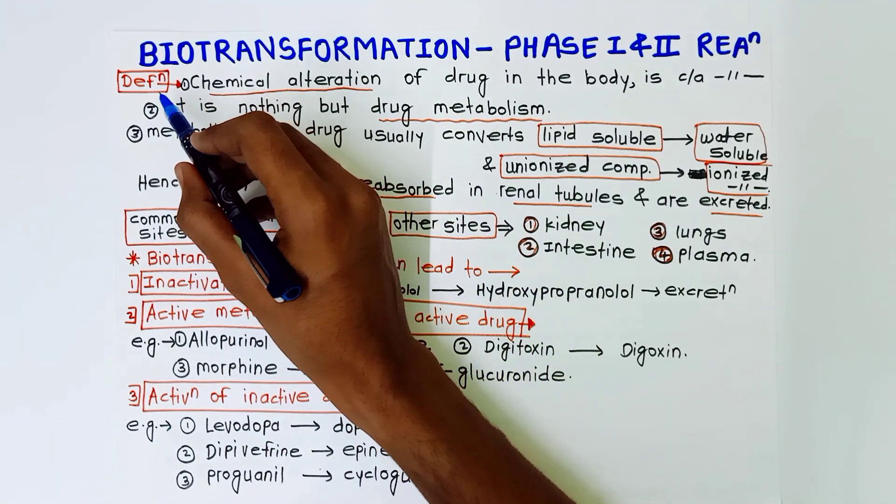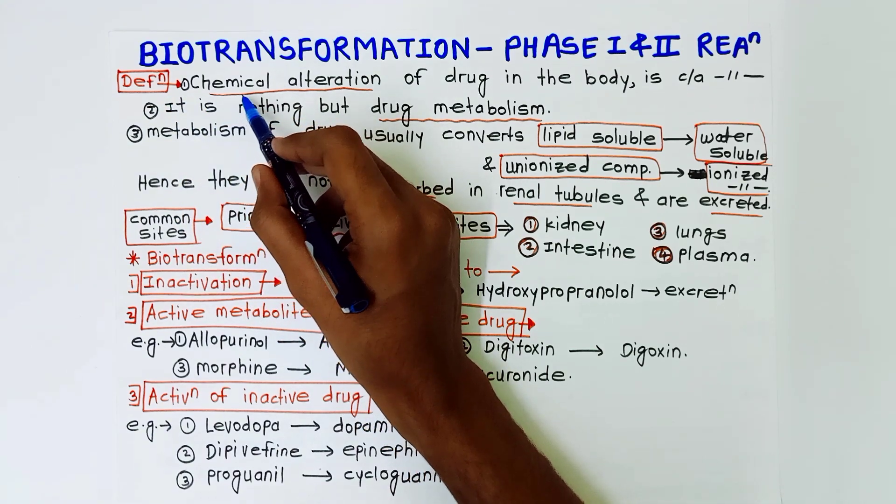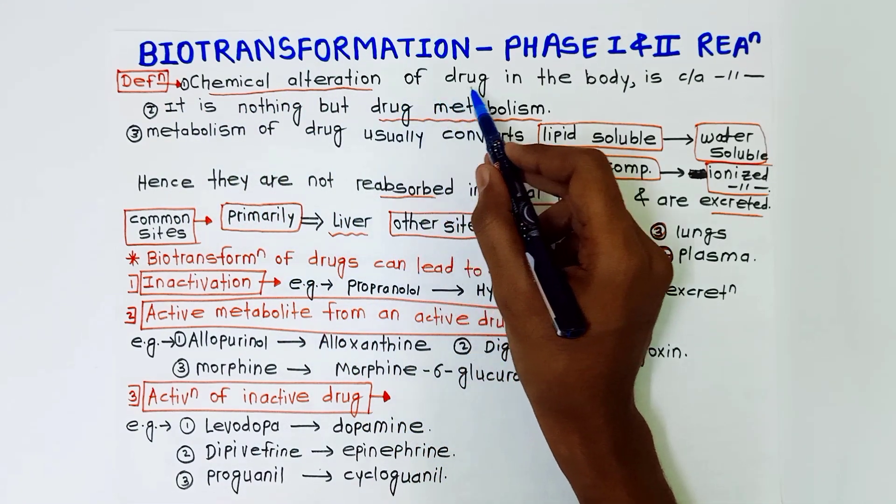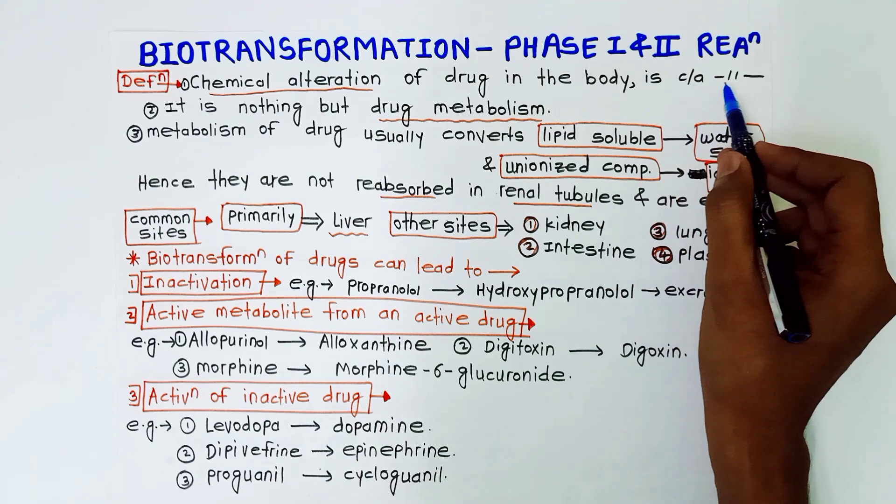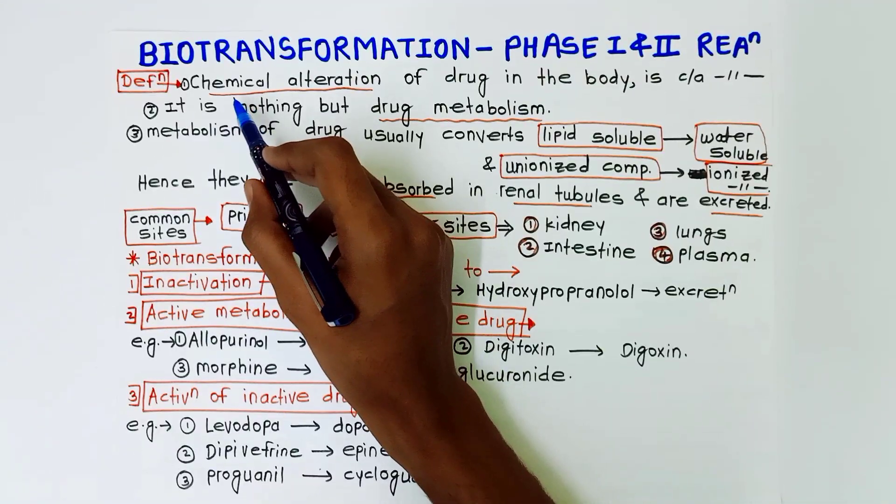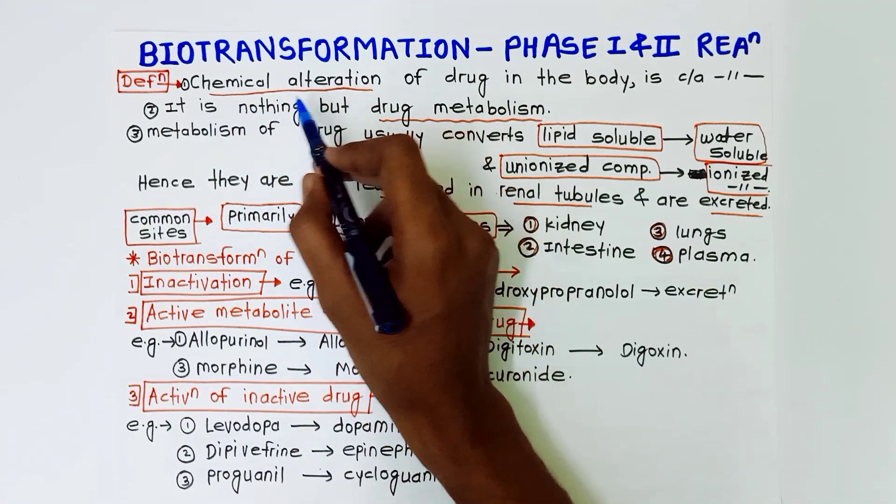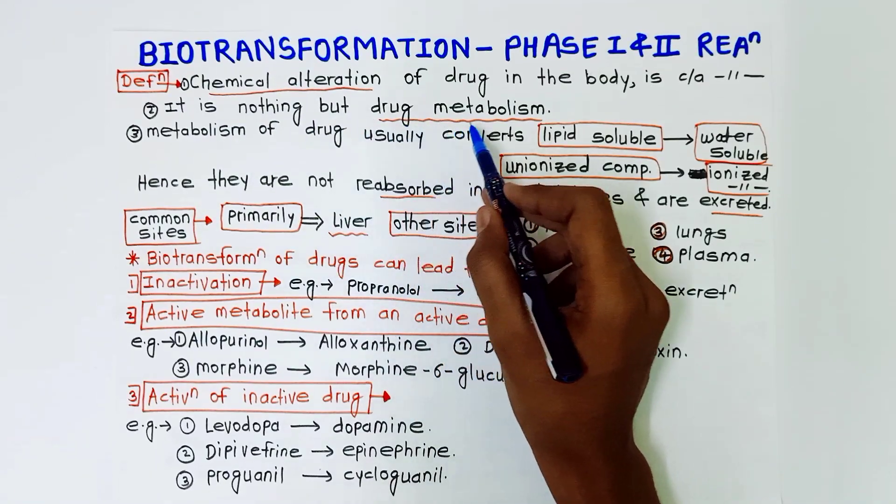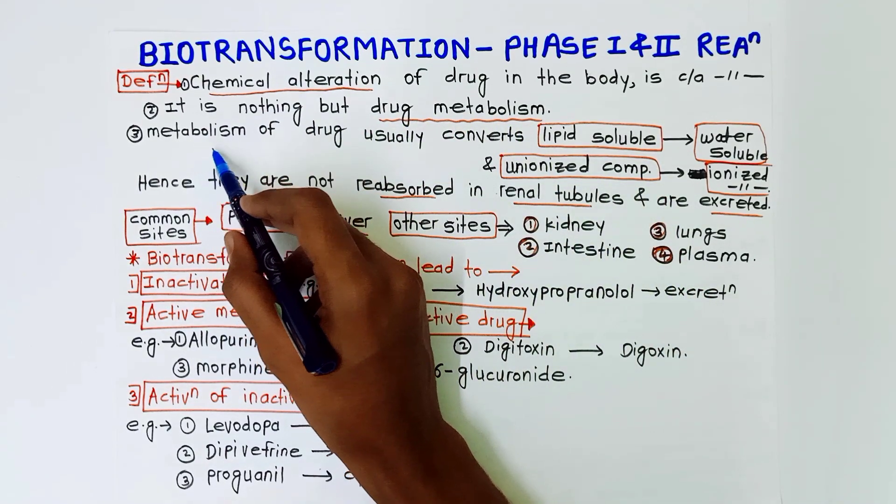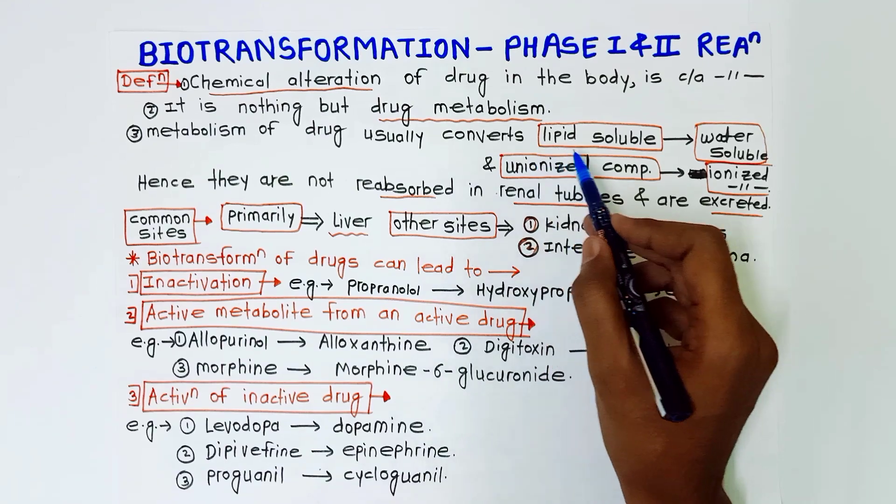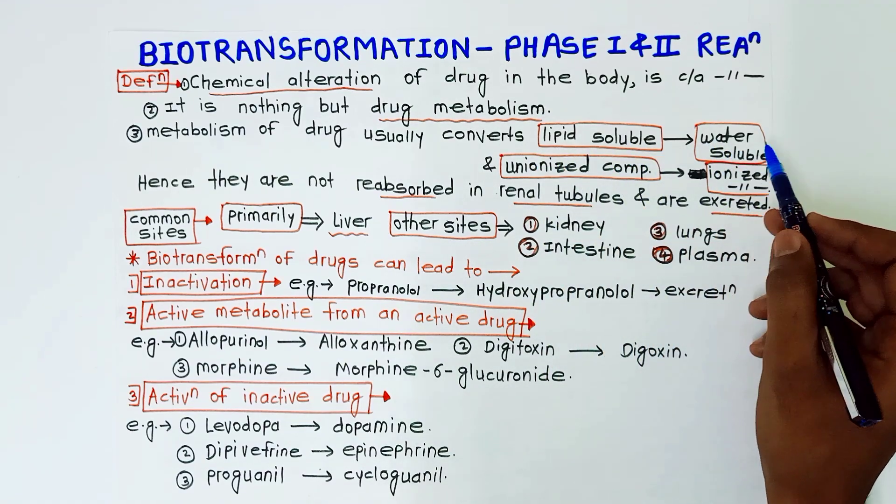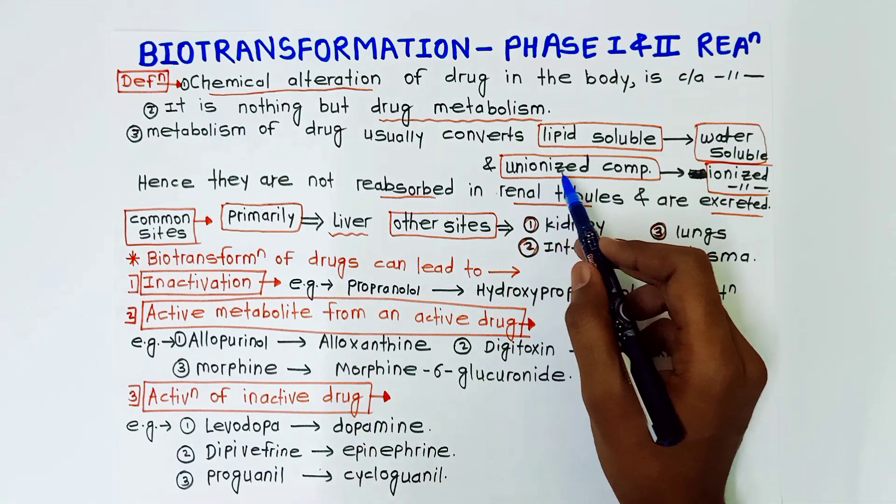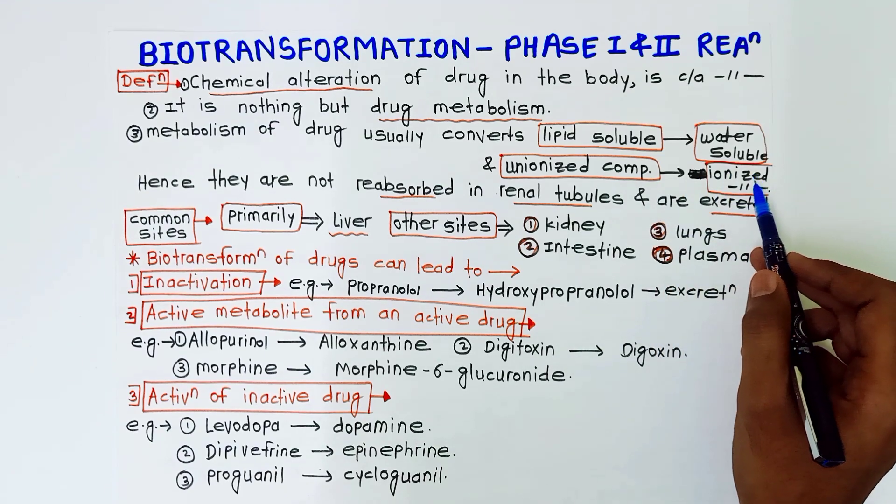Let's start the video. First of all, definition: the chemical alteration of drug in the body is called biotransformation. It is basically chemical alteration, it is nothing but drug metabolism. The metabolism of drug usually converts lipid soluble substances into water soluble and unionized compounds into ionized compounds.